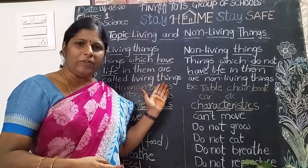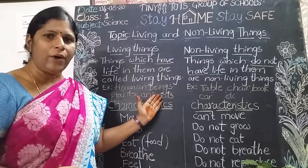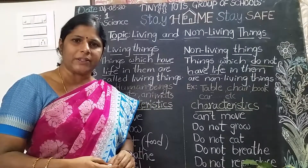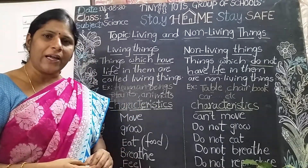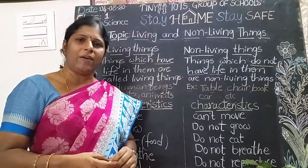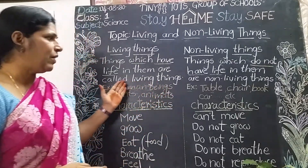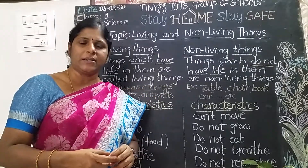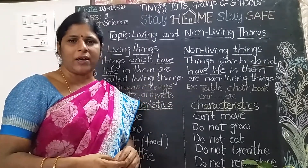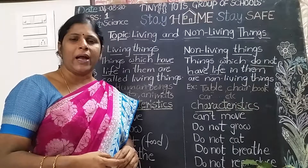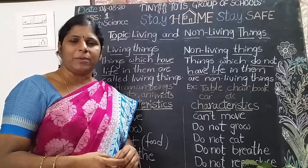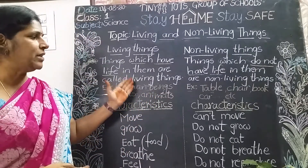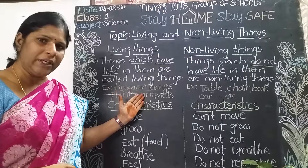So what are called living things? The things which have life in them are called living things. Which things have life? Human beings, plants, animals, birds, insects, squirrels, frogs, fishes — all these things have life in them. That is why these are called living things.